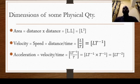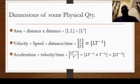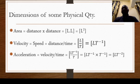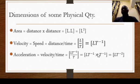For dimension of acceleration, you have to know the formula of that quantity — it is very important to know the formula before writing its dimension. Acceleration is velocity over time. Dimension for velocity is [LT⁻¹] and for time is [T], so that gives [LT⁻¹ × T⁻¹]. Adding the indices, −1 plus −1 gives −2, so the dimension of acceleration is [LT⁻²].